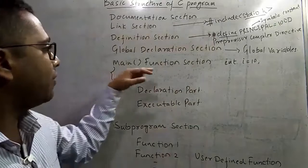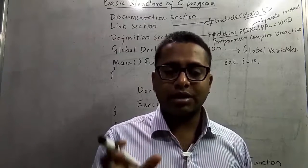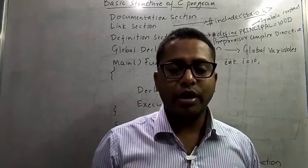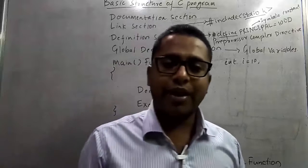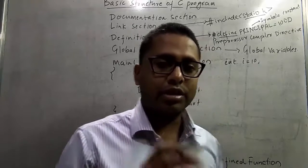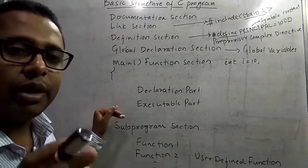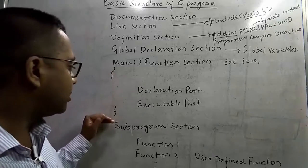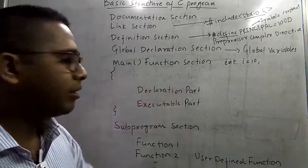Next we have the main function section. As discussed in our last video, each and every C program must contain a single main function, which is the starting point of the program — execution begins from there. There should be only one main function inside each C program. Every main function starts with an opening curly brace, which tells the compiler this is the beginning of the function, and ends with a closing curly brace, which tells the compiler this is the end.